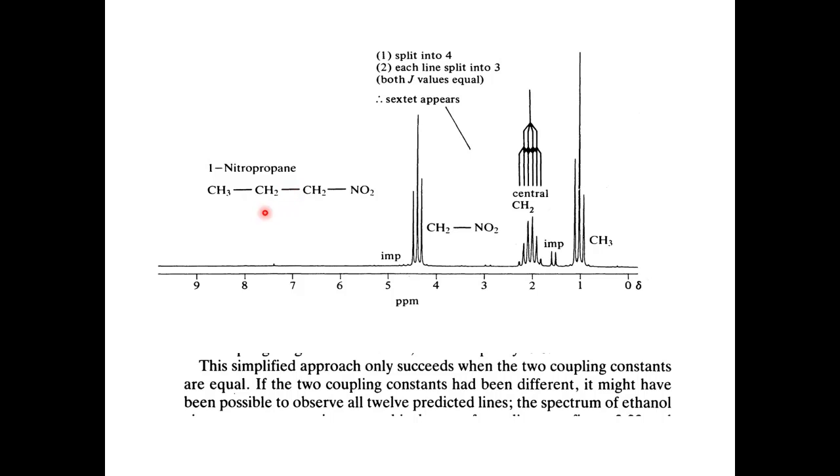Then you get n plus 1 rule applied here. So if J value is same, how you apply n plus 1 rule? So 3 plus 2 is 5. 5 protons, all J values are same, 5 plus 1, so 6 lines.